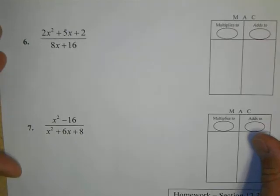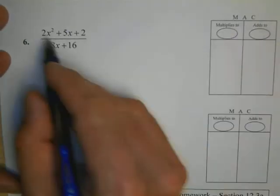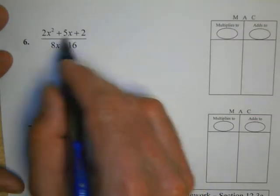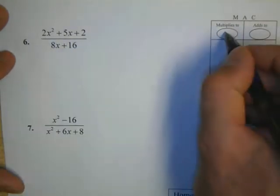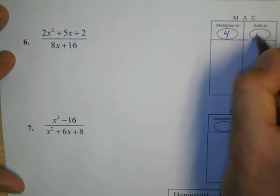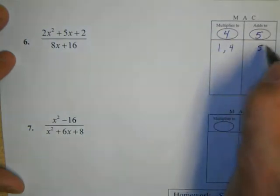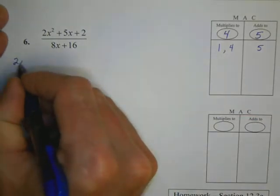On our second problem, number 6 on this page, as we look at it, we're going to look at the numerator and we're going to say we have to use the Mach method because it's a trinomial. However, because we have a 2 in front and a 2 in the back, we're going to have to say what multiplies to 4 and adds to 5? Well, those numbers are 1 and 4.